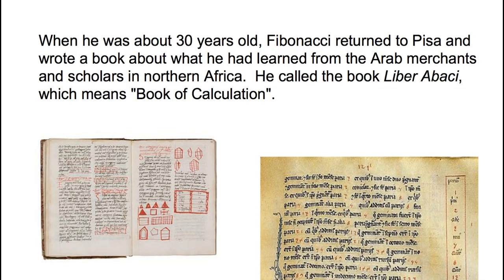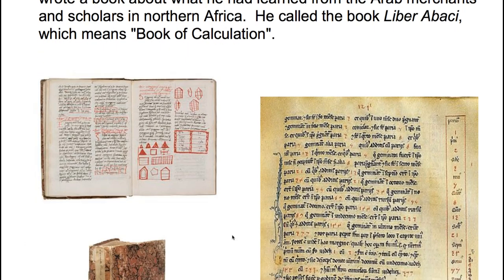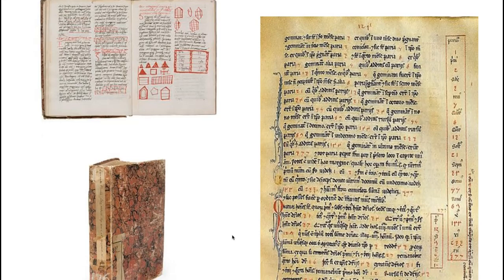When he was about 30 years old, Fibonacci returned to Pisa and wrote a book about what he had learned from the Arab merchants and scholars in Northern Africa. He called this book Liber Abaci, which means the book of calculation. Here are some pictures of what that book looked like.